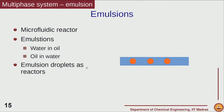The other type of multiphase system is where we have one liquid and another liquid — the example here is of a microfluidic reactor. In this case you have emulsions which could be either water-in-oil or oil-in-water, and the idea is to get very controlled size droplets which are then used as reactors.